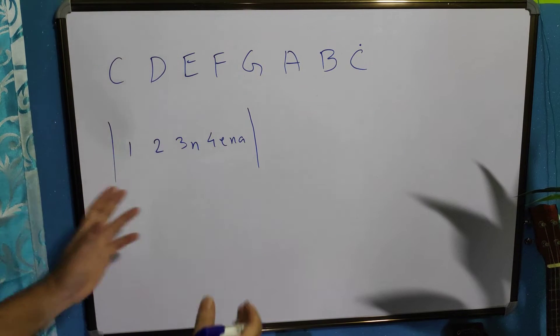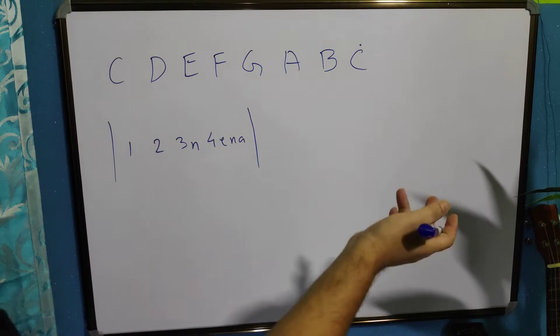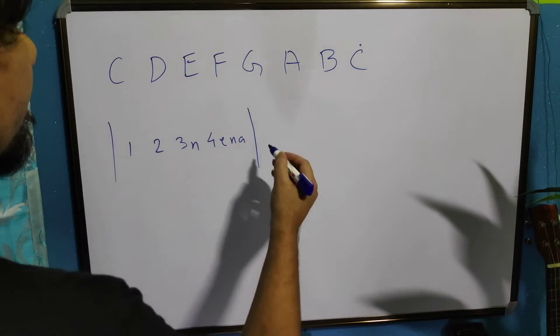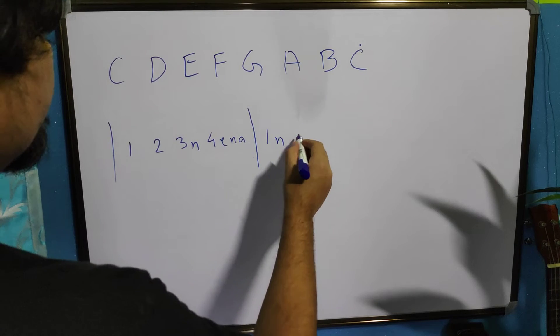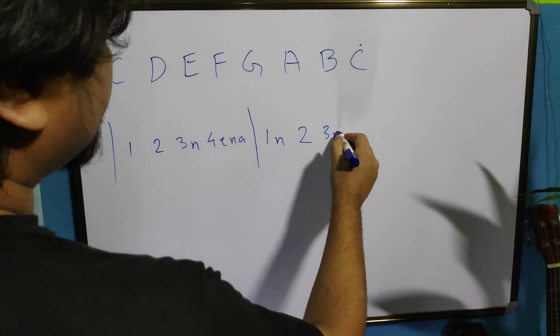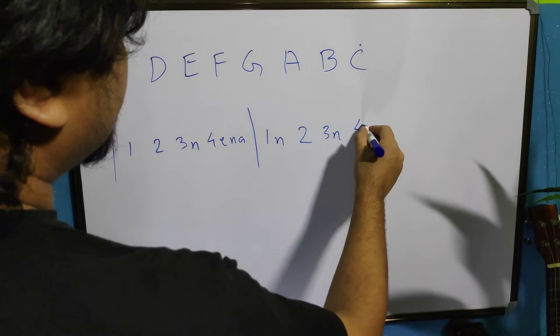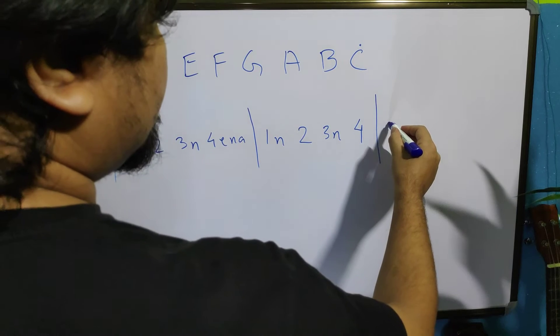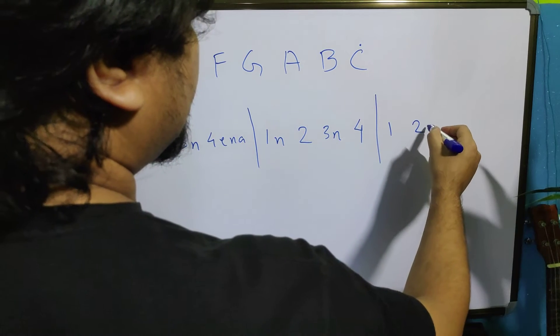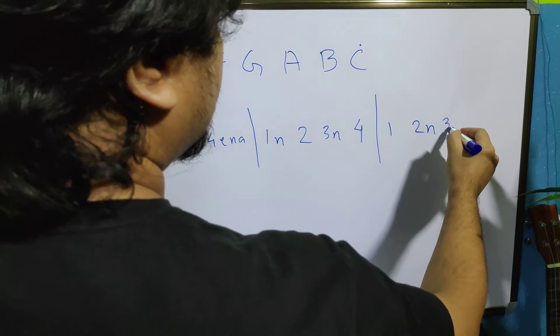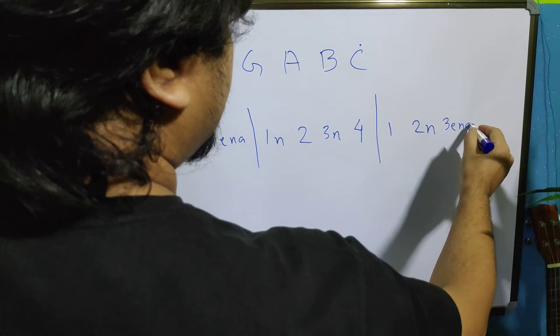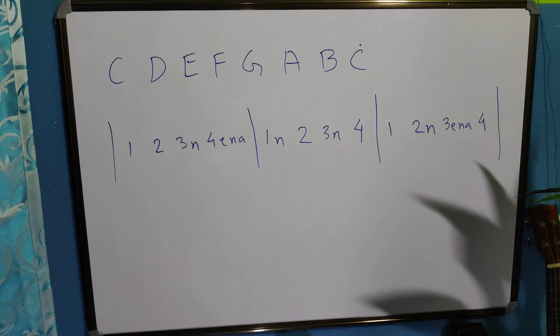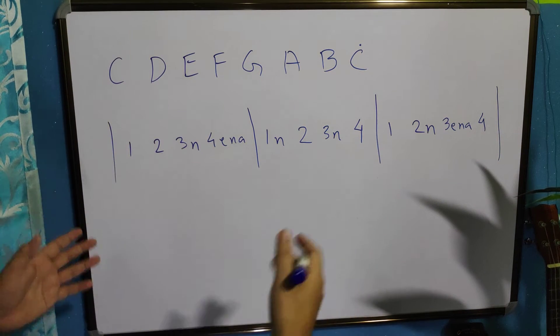So, this is a rhythm pattern. Then again, you can arrange a different rhythm pattern. For example, this is a rhythm pattern. And it goes on like that. You can make one, two n, three e n a, four. So, you have made this one.